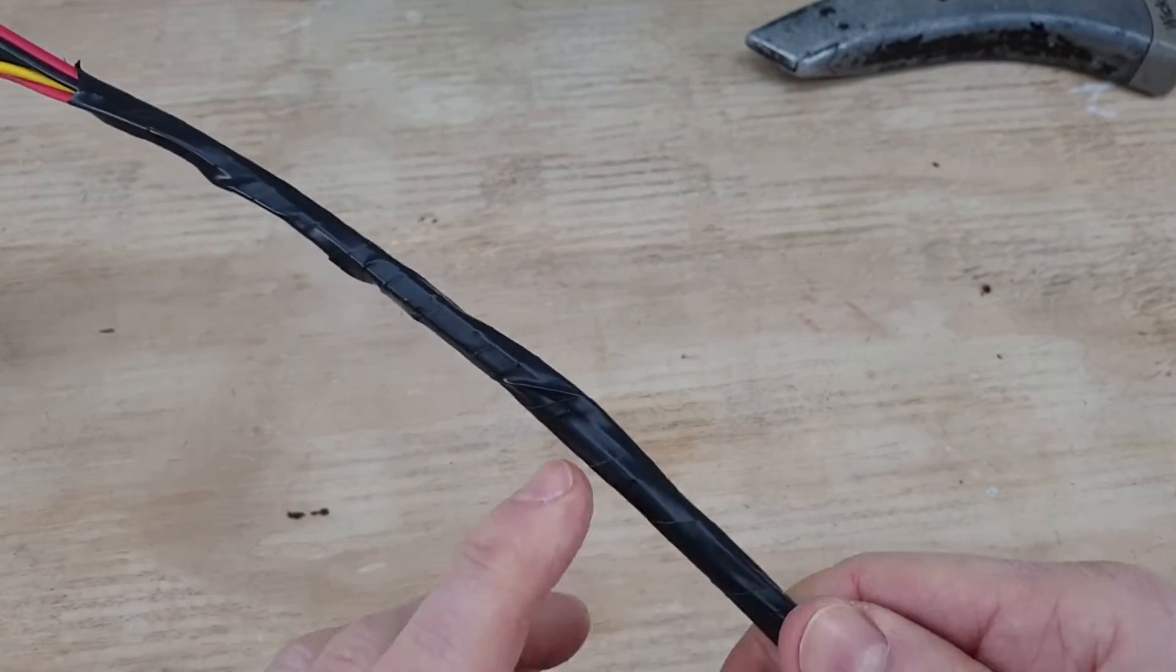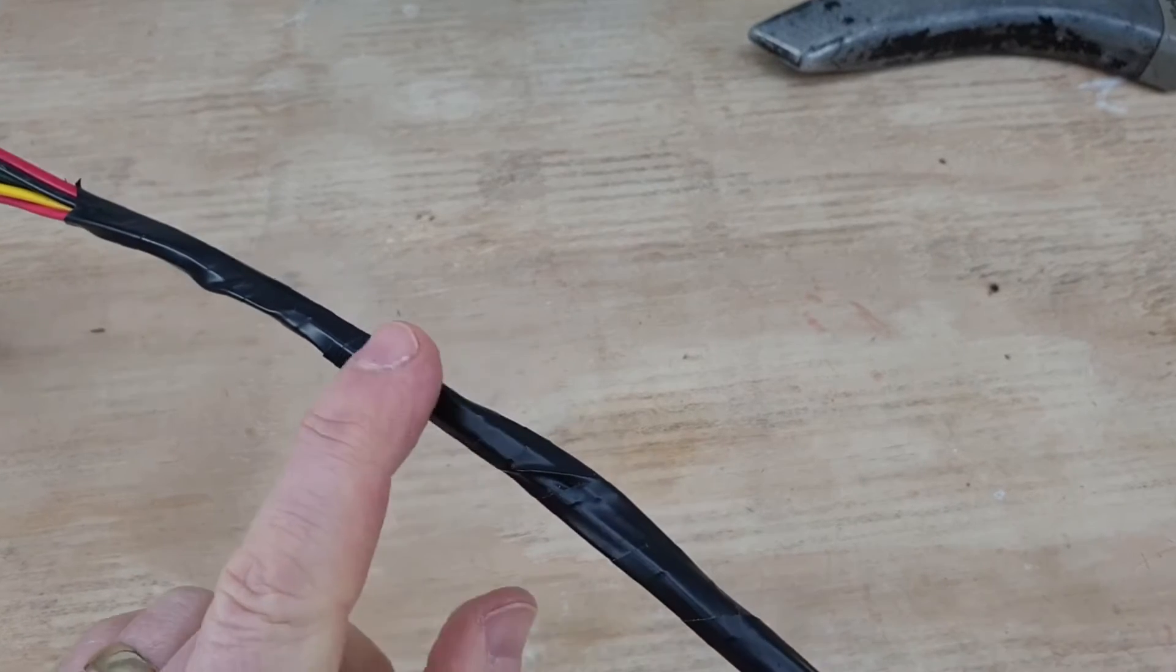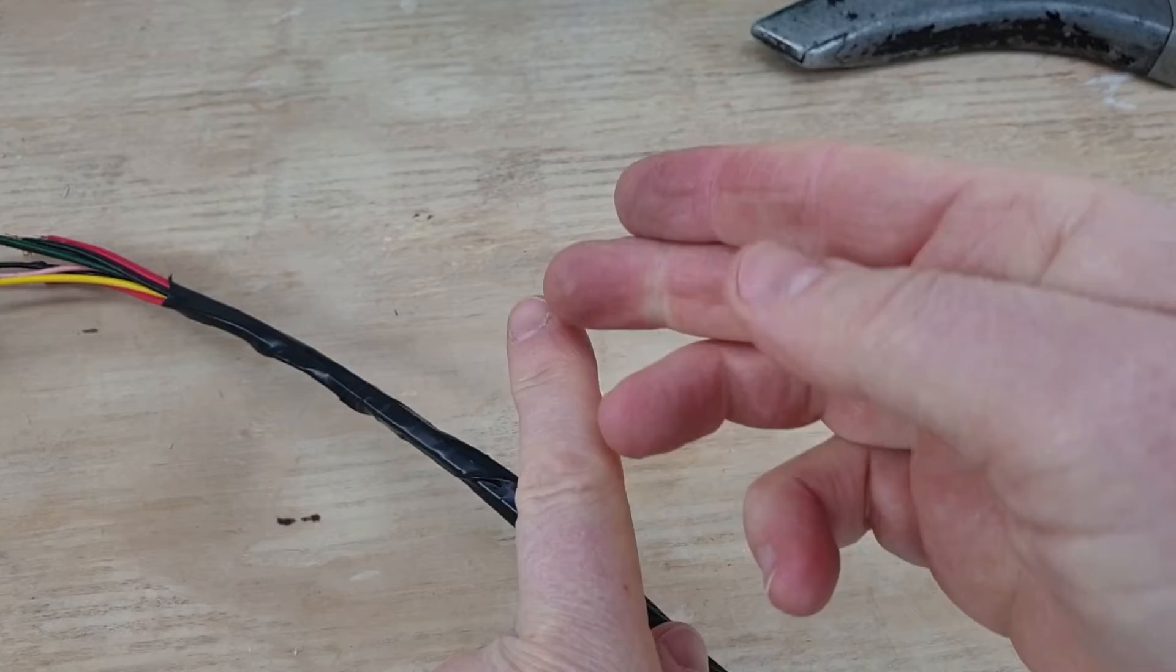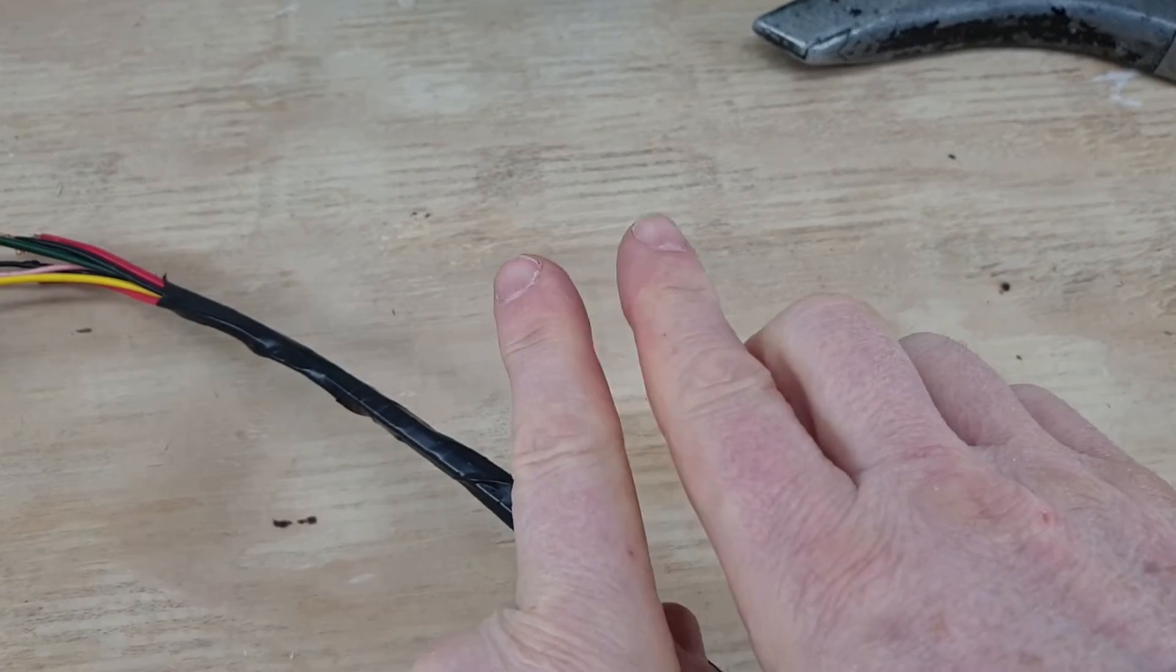What we're going to do is, if you can, hopefully you can see where two cables are next to each other. The idea is we're going to run our knife down the middle of these two cables so we don't cut either of them.